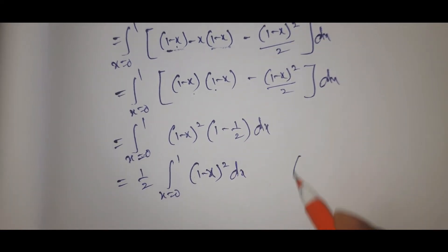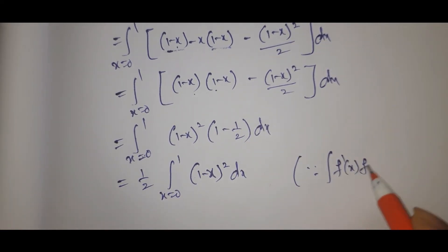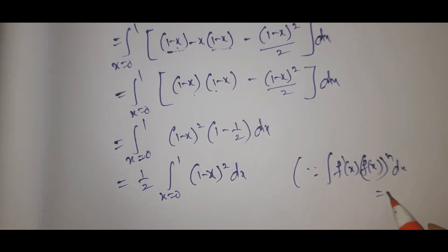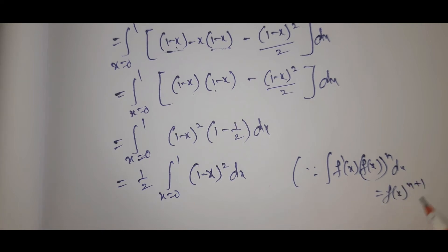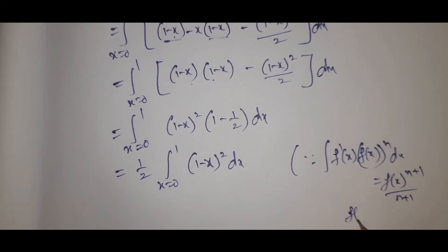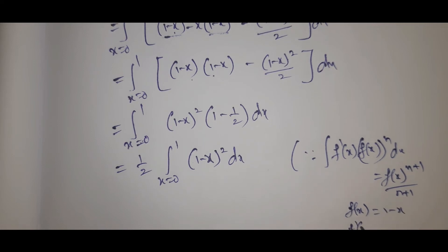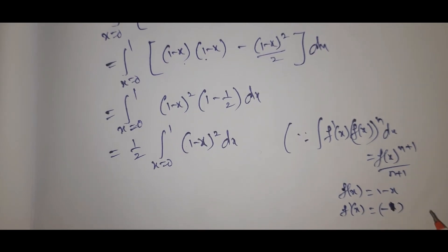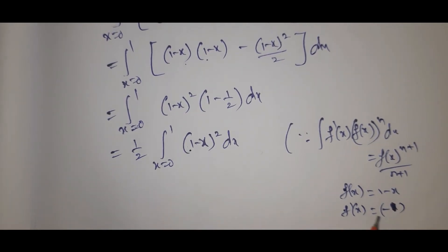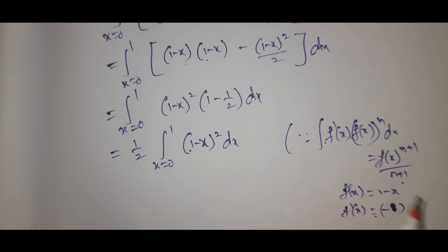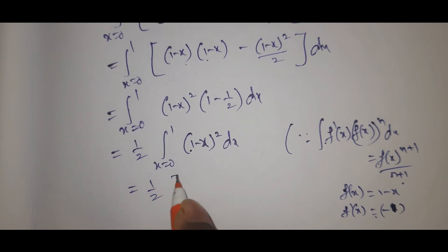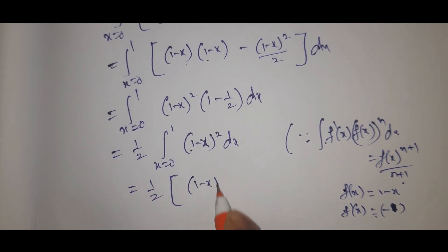Using the formula: integral f dash of x times f of x to the power n dx equals f of x whole to power n plus 1 by n plus 1. If f of x equals 1 minus x, then f dash of x equals minus 1. So we have minus 1 times 1 minus x whole cube by 3.